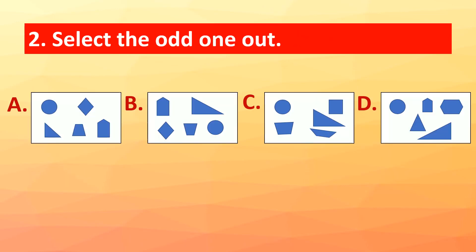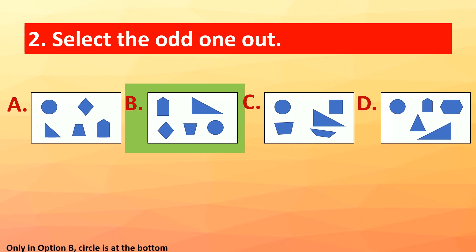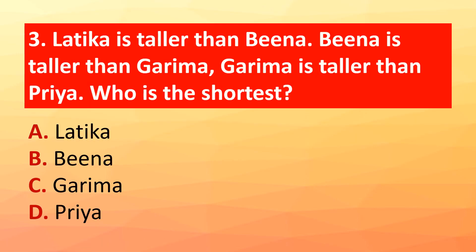Question 2: Select the odd one out. The correct answer is option B. Only in option B is the circle at the bottom. Question 3: Latika is taller than Bina. Bina is taller than Garima. Garima is taller than Priya.